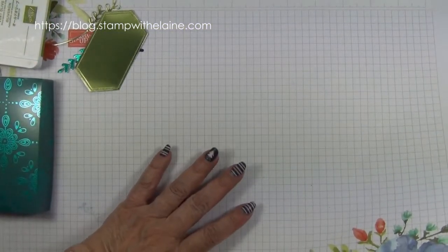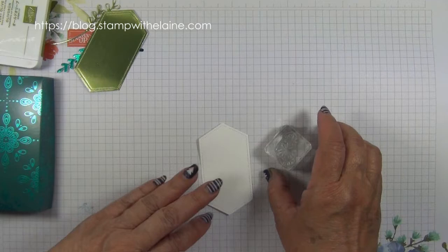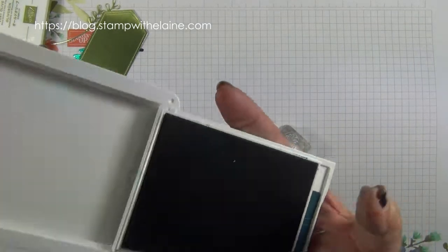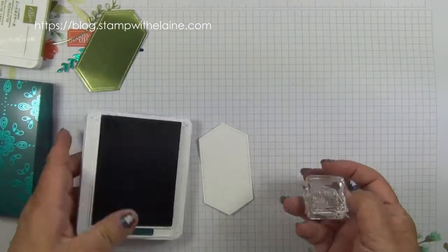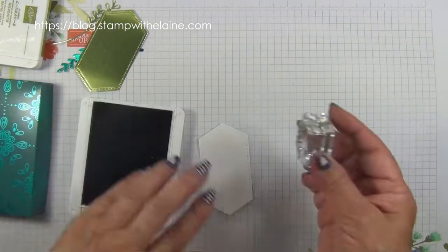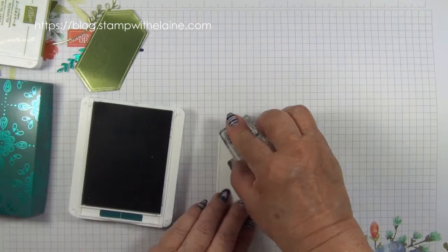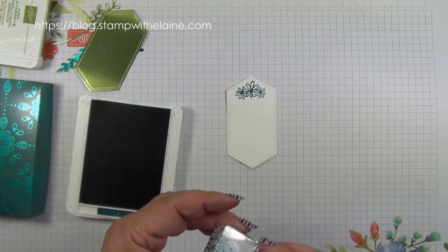I'll bring back my foam mat so I can do a bit more stamping. And this time I'm using the Pretty Peacock ink to stamp a flower at the top and one at the bottom.